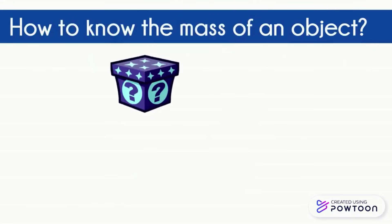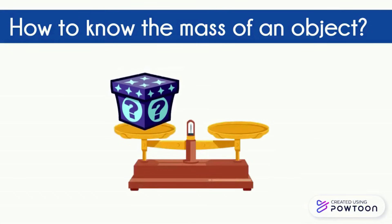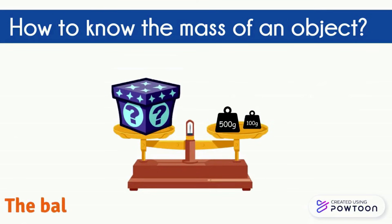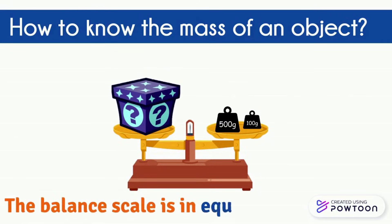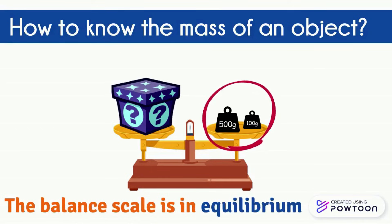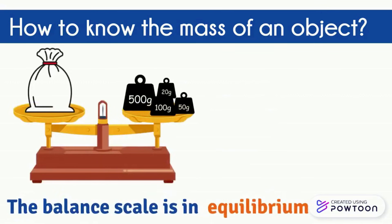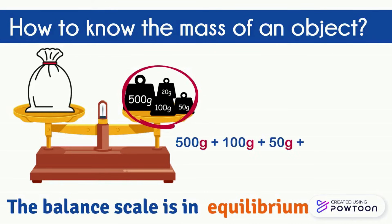How do we know the mass of an object? To measure the mass of an object, place the object on one of the pans, and try to balance the two pans by placing as many benchmark masses as necessary on the other pan. The mass of the object is equal to the sum of the benchmark masses used. For example, to find the mass of a bag, we add up all the benchmark masses: 500 grams plus 100 grams plus 50 grams plus 20 grams equals 670 grams.